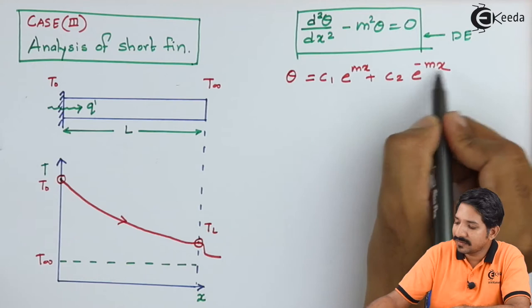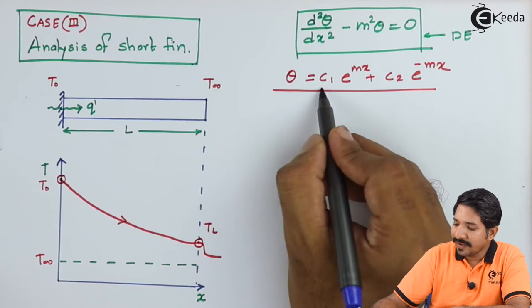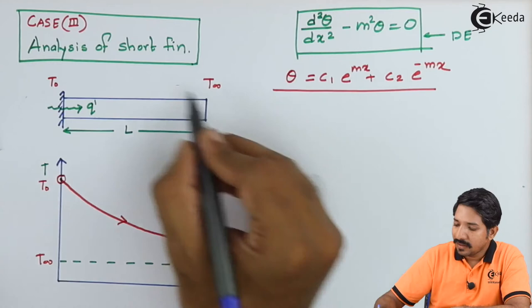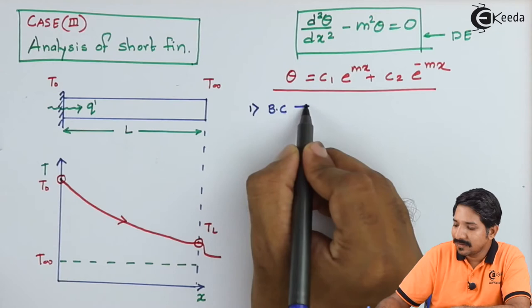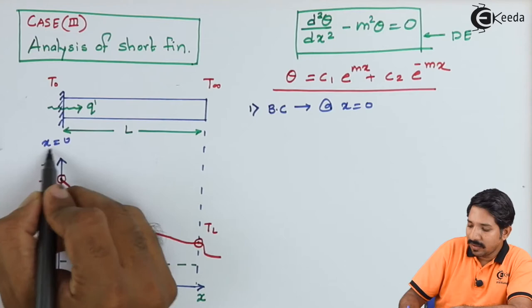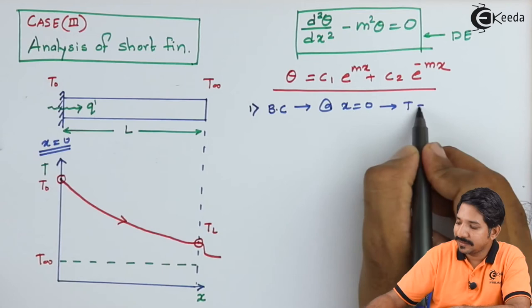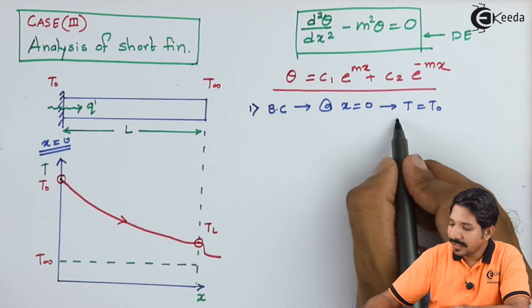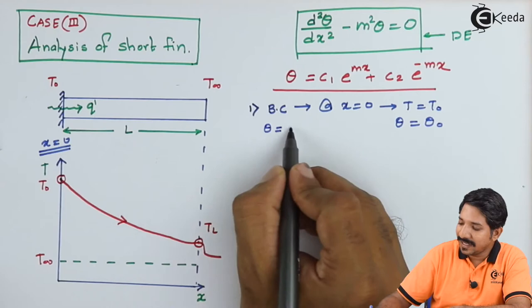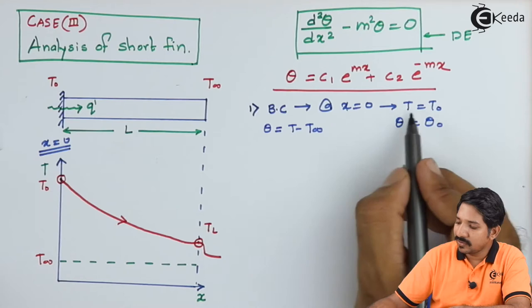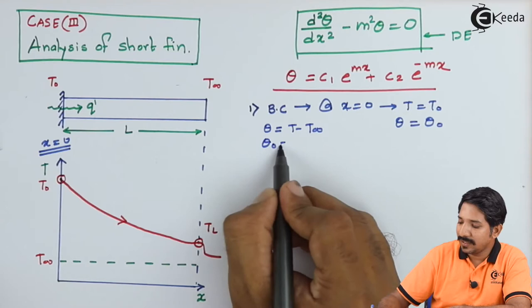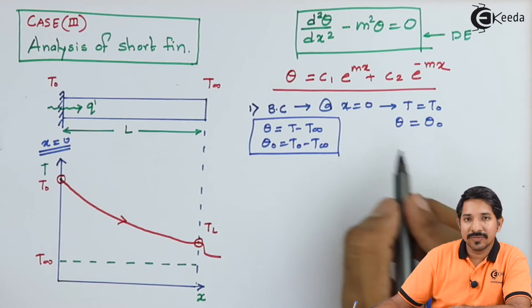We must find out the values of C1 and C2 using boundary conditions. In the third case, the first boundary condition is: at x equal to 0, the value of T is same as T0. Since T equals T0 at x equal to 0, we can write theta as theta0 — where theta0 is defined as T0 minus T infinity. Substituting this boundary condition gives theta0 equal to C1 plus C2.